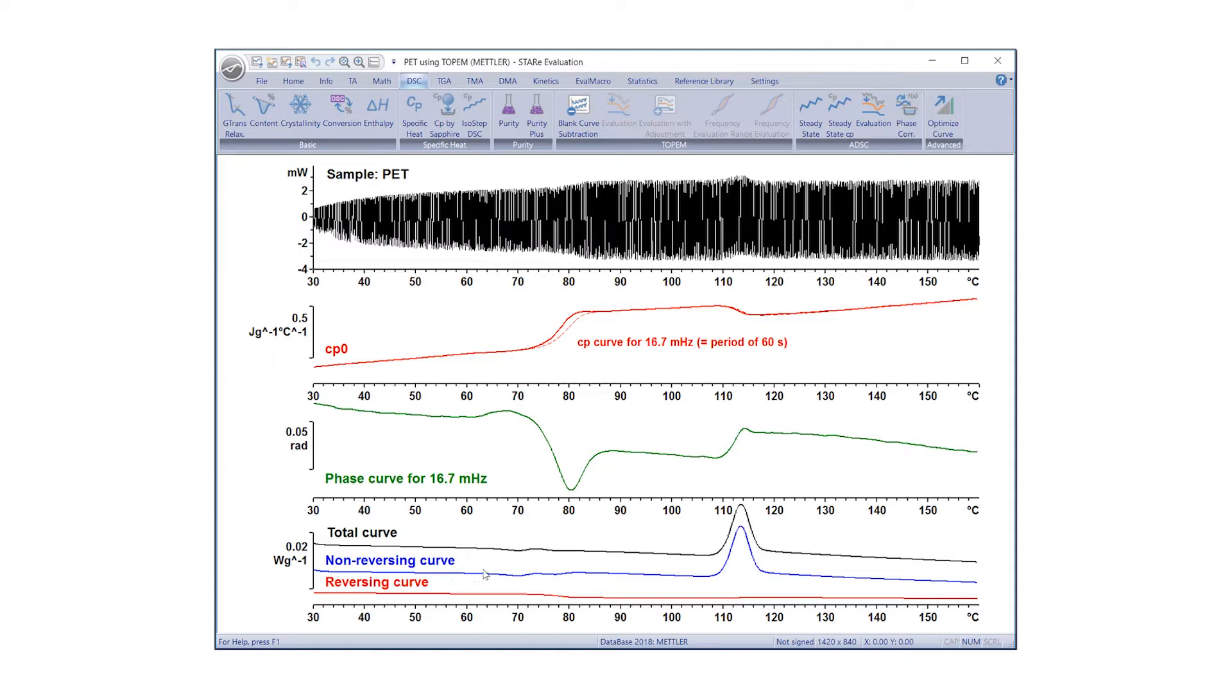The enthalpy relaxation would normally be observed in the non-reversing and total heat flow curves. In this example, the effect is very weak and is hardly visible. The peak due to cold crystallization is only observed in the non-reversing and total heat flow curves.